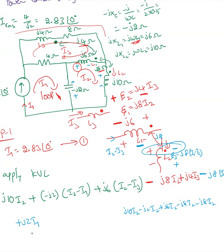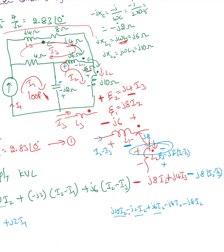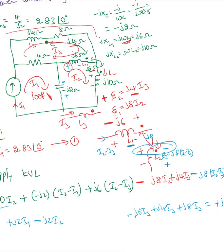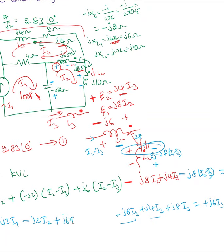Simplifying the Loop 2 equation: collecting I1 terms gives +j2·I1. Collecting I2 terms: j10 − j2 + j6 − j8 − j8 gives −j2·I2. Collecting I3 terms: −j6 + j4 + j8 gives +j6·I3, equal to zero. This is my second equation.